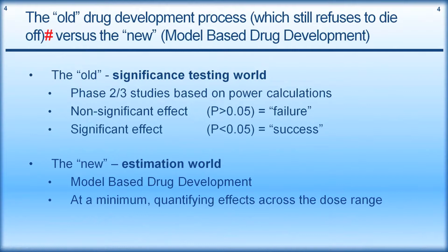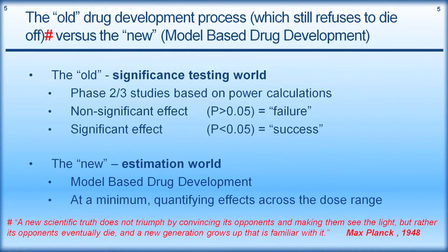You get this binary type output at different doses, which really isn't very useful. In the new paradigm, we're talking about estimation - not a binary response, but rather how much effect does each dose have across the dose range? I have very few problems convincing people that we should be in an estimation world, yet I still see lots of studies being run the old-fashioned way around significance testing, especially Phase II, which is very paradoxical to me.